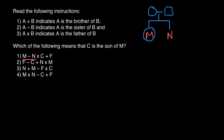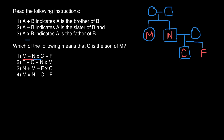Next we have N times C, and 'times' means the first is the father of the second, so N is a father of C. Now we know the gender of N — he is male. We have C here and we don't know the gender of C yet. The plus sign means the first is the brother of the second, so C is a brother of F. He is male, and we don't know the gender of F.